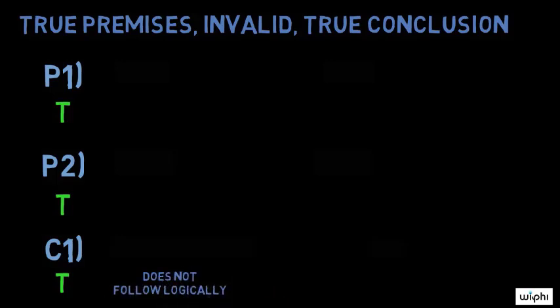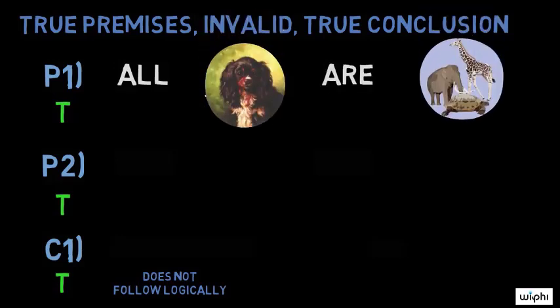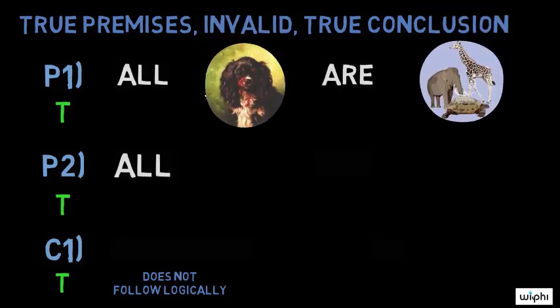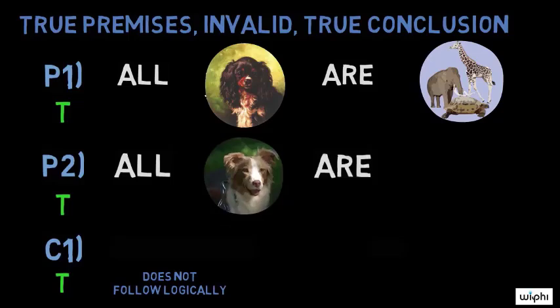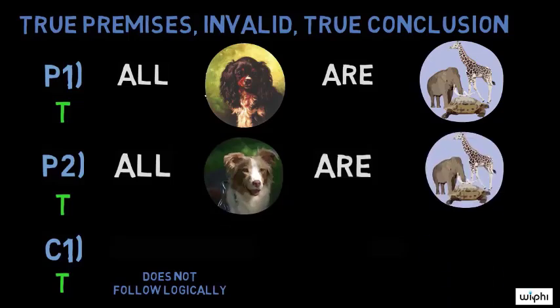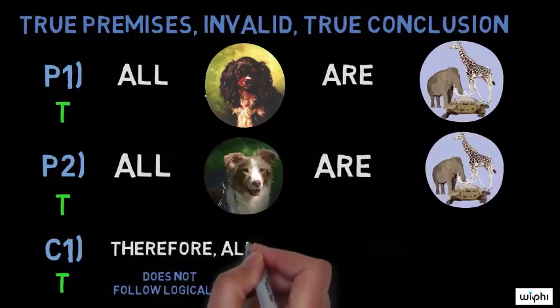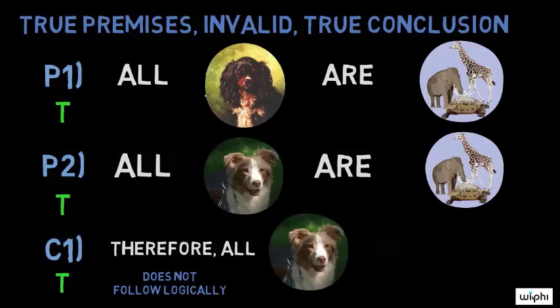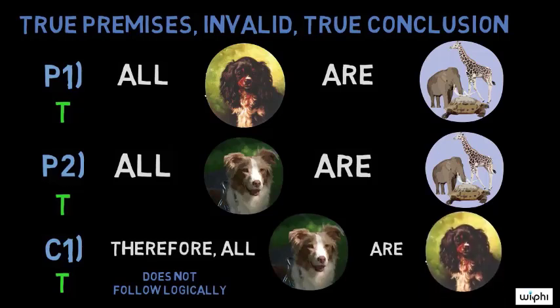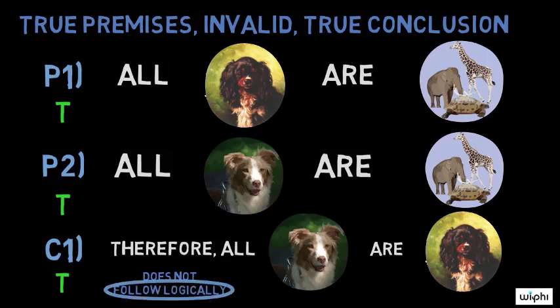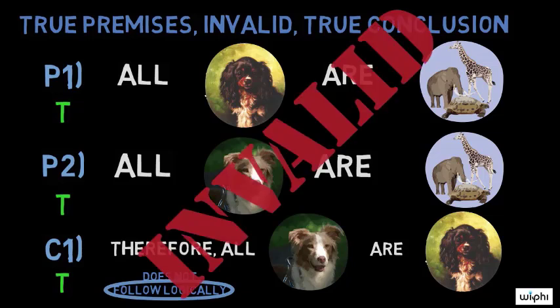Here is an example of such a case. Premise one: all dogs are animals. Premise two: all Australian shepherds are animals. Conclusion: therefore, all Australian shepherds are dogs. Because of this, it is important that we are careful to ensure that the conclusion really does follow from the premises under consideration when we are evaluating an argument.